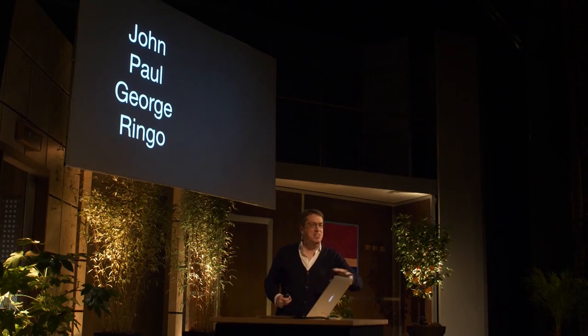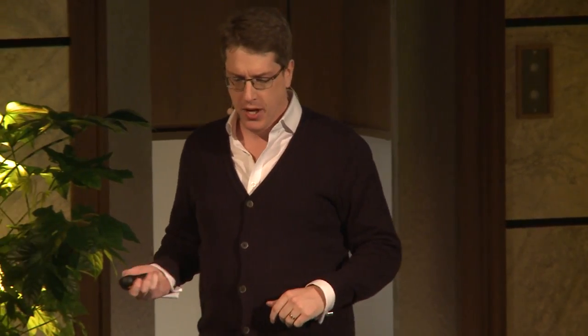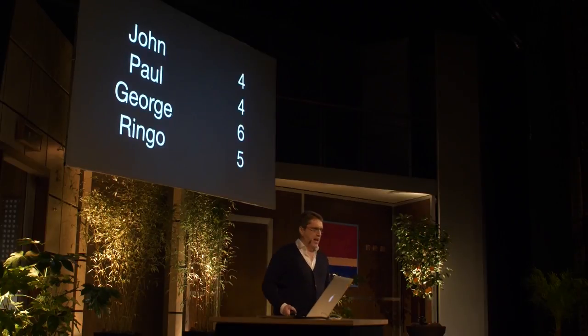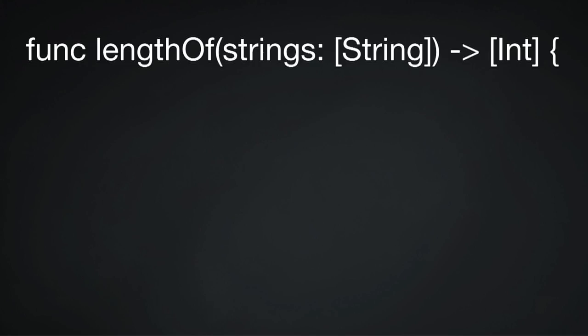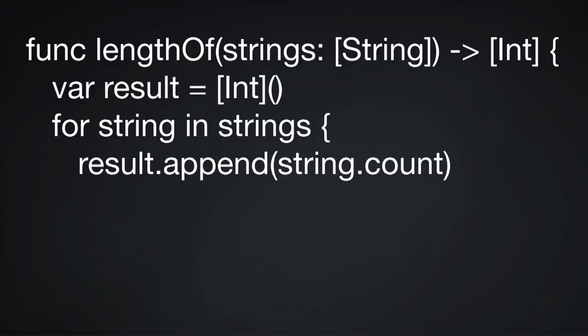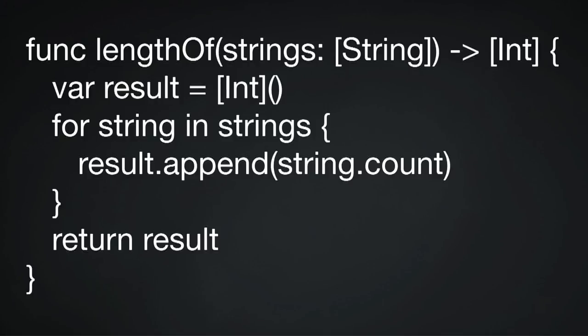As an example, imagine a function which accepts an array of names — John, Paul, George, and Ringo — and you want this function to transform those names into the lengths of those names. We know that John has four, Paul has four, George has six, Ringo has five. Array of strings in, int array of counts back. If you're doing that declaratively, you would say: length of strings, string array going in, return int array, make a new empty int array, loop over the strings, add the count to the int array, end the loop, and return the result. That is your declarative function.